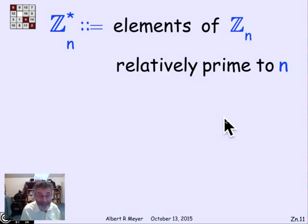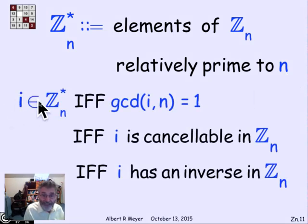Well, when can you cancel it? It's the same answer that we had for modular arithmetic. It's when the number is relatively prime to n, then you can cancel it in Z_n. So let's let Z_n star be all of those elements that are relatively prime to n. And the same theorem that we had for congruence can be translated over into a statement about Z_n. An element i is in Z_n star if and only if the GCD of i and n is 1. That's by definition. If and only if i is cancelable in Z_n, if and only if i has an inverse in Z_n. And the proofs are the same as the proofs that we had for modular arithmetic. Just rephrased in terms of the ring Z_n.